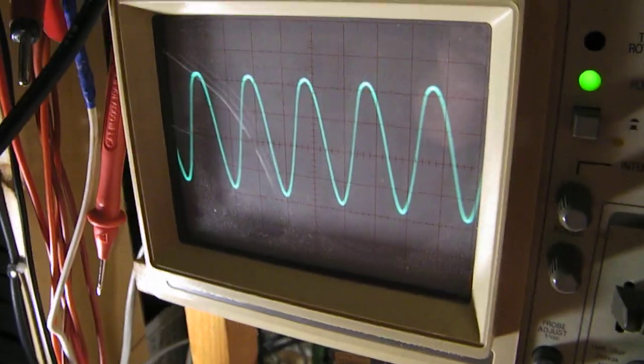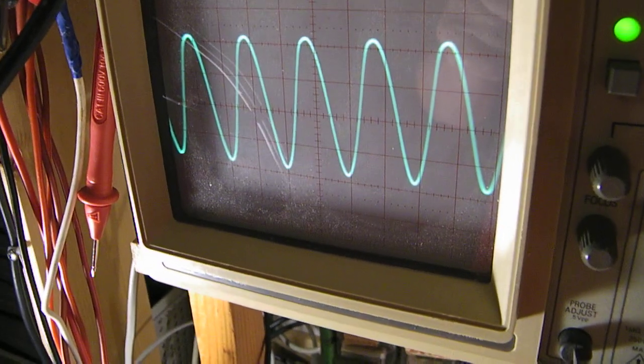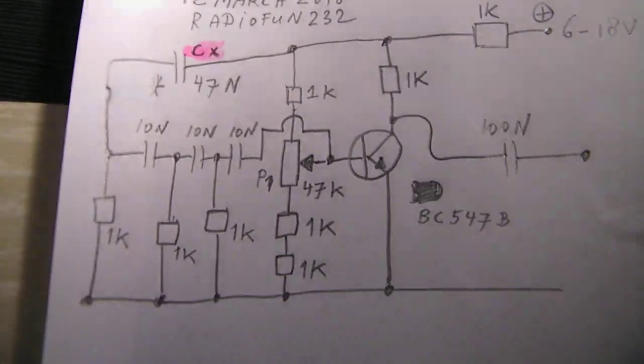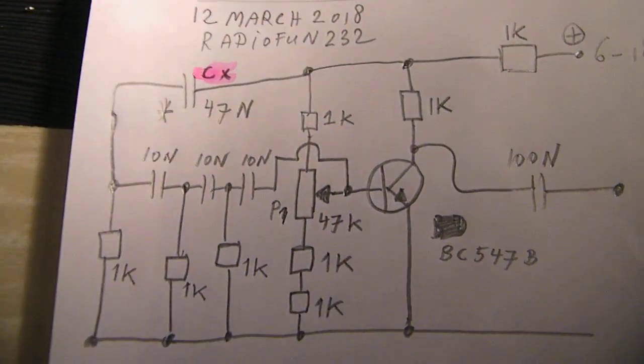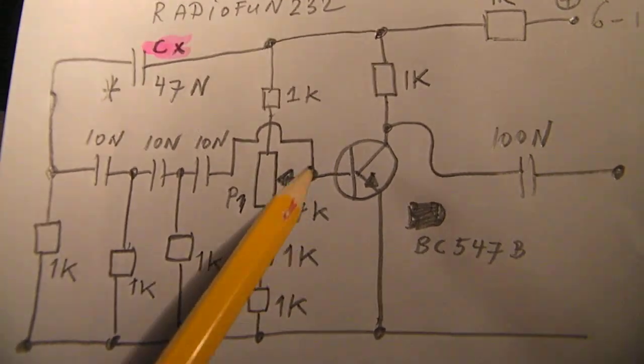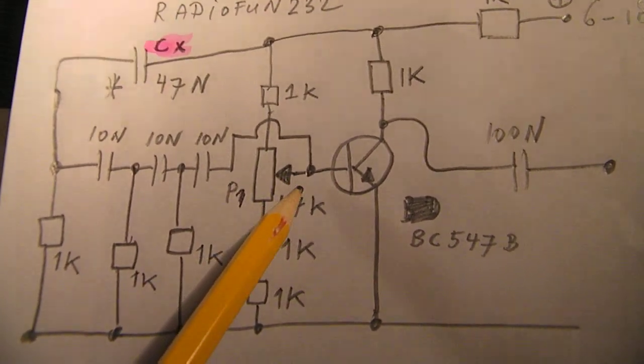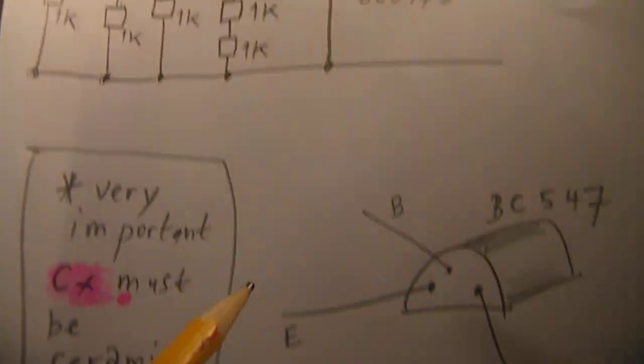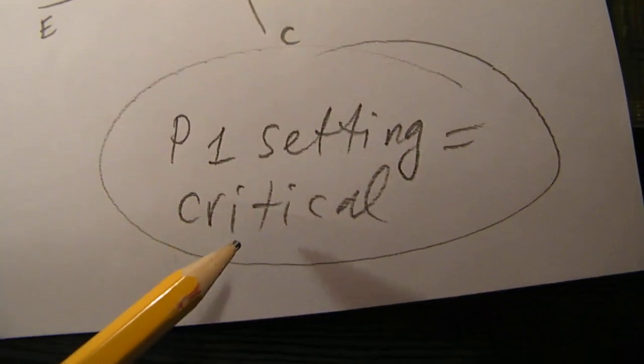Here you see the sine wave that's generated and all is very simple, but there are a few important things to tell. This is a 47k potentiometer and that setting from that potentiometer is critical.